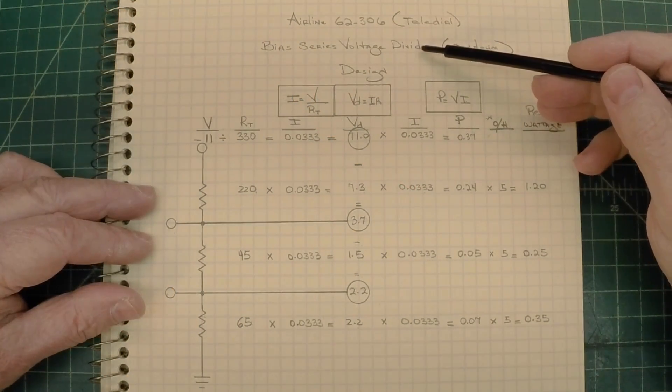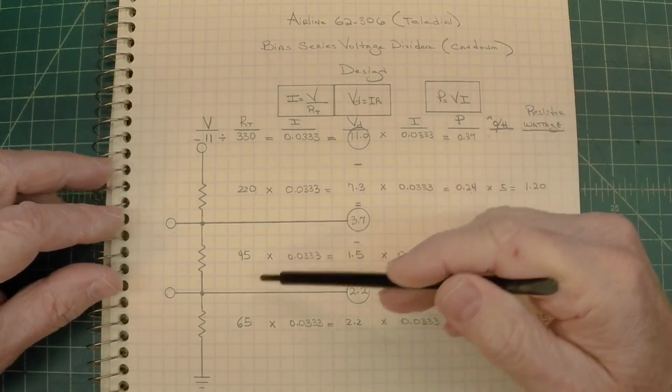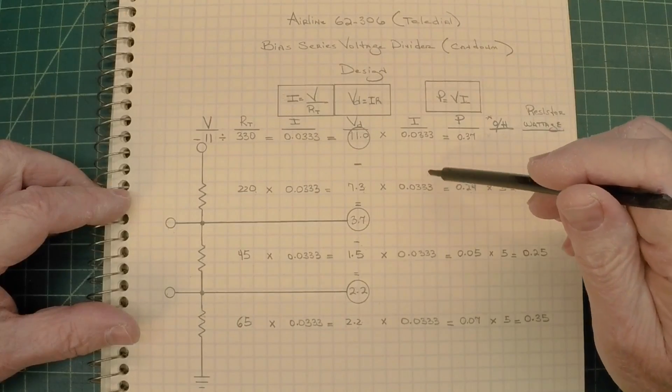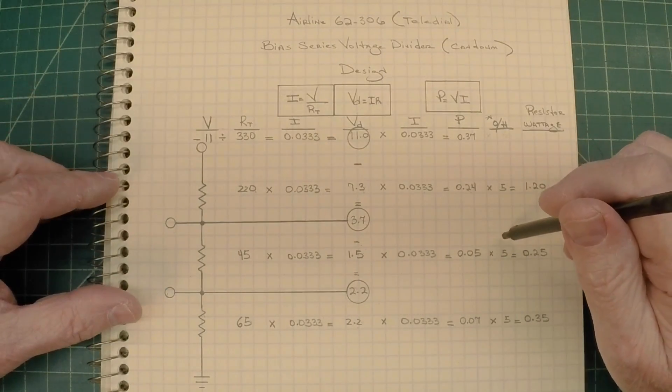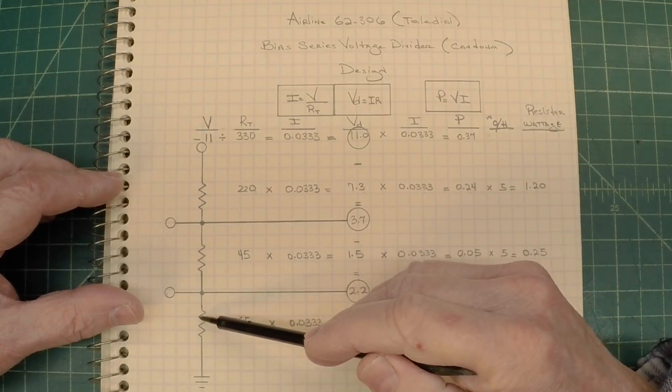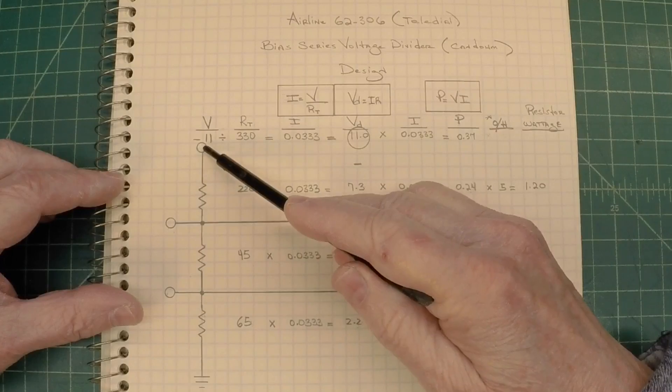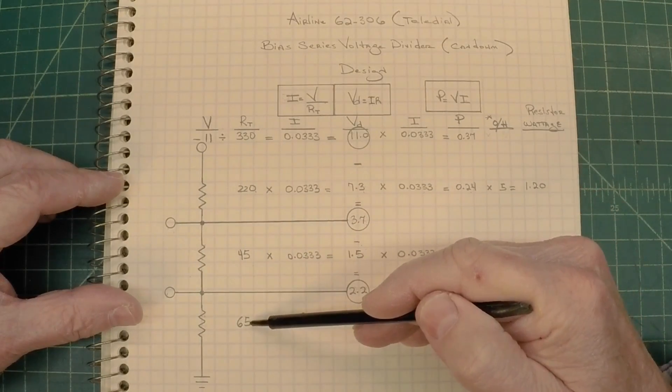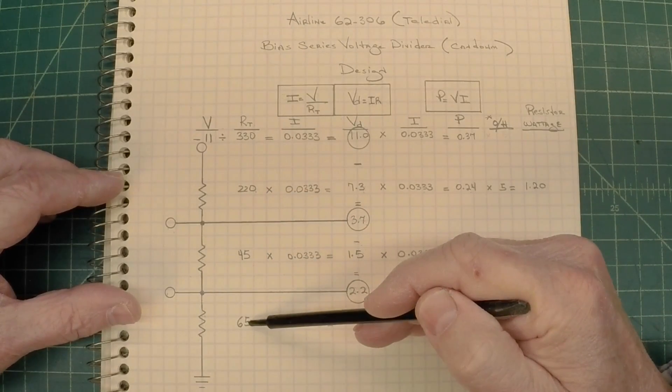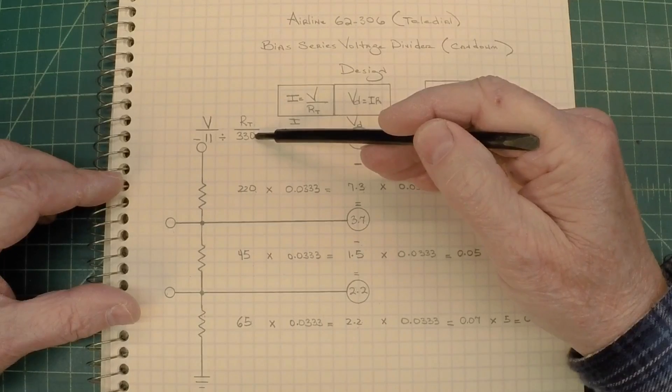Taking a quick look here at the bias series voltage divider, that being the can dome, that's inside the Airline 62306. Let's work through the math real quick on the voltage drop per section, as well as the current or power requirements, that being the wattage for replacement resistors if needed. You'll notice I have the resistors called out here, and I have the tap points here. So we'll start here on this column, and you'll see I have the individual resistor values called out, the 220, 45, and 65. I'm adding those together, the total, the sum, and that gives me an RT of 330 ohms.